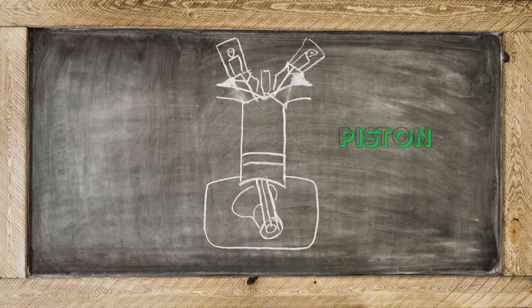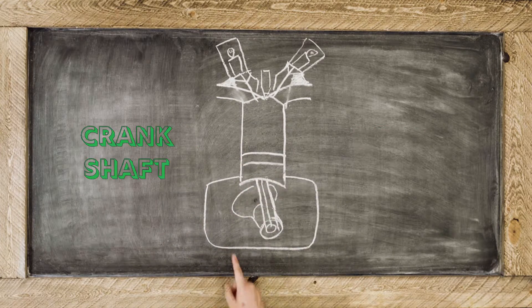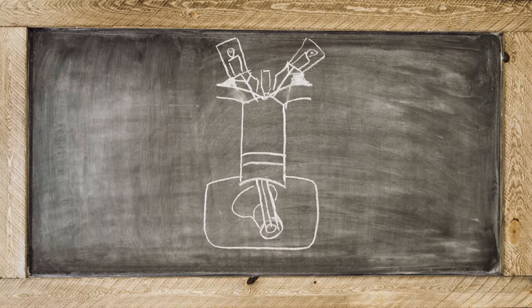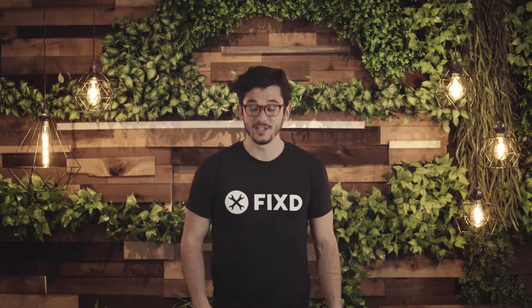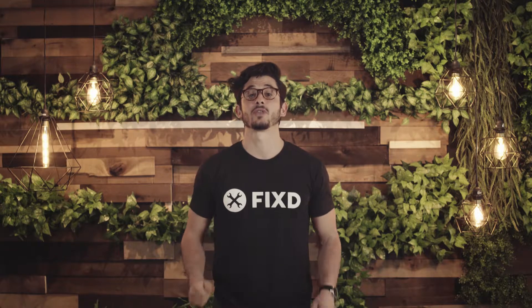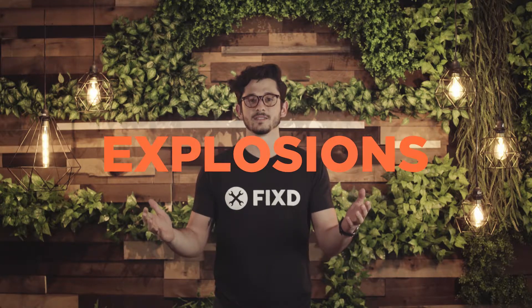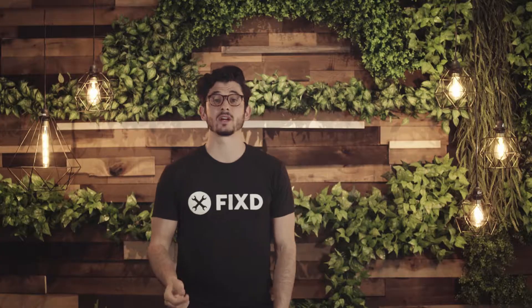Within each cylinder is a piston. That piston is connected to the crankshaft, and that crankshaft is connected to a connecting rod. The engine then delivers power to the drivetrain through explosions. These explosions cause the piston to go down, which then turns the crankshaft.